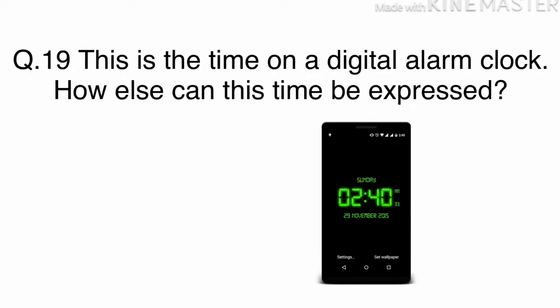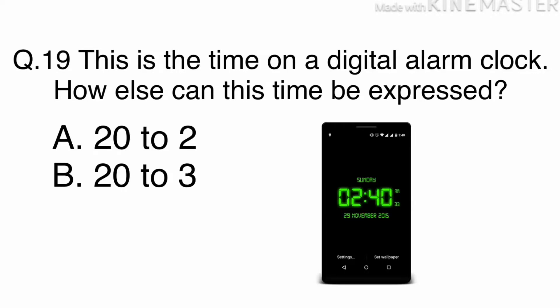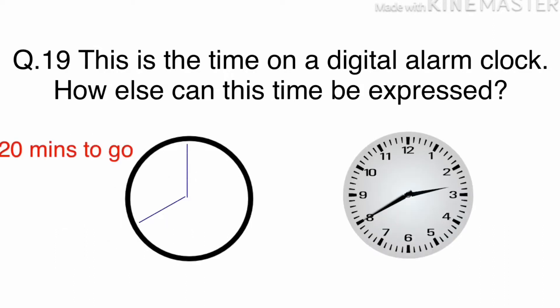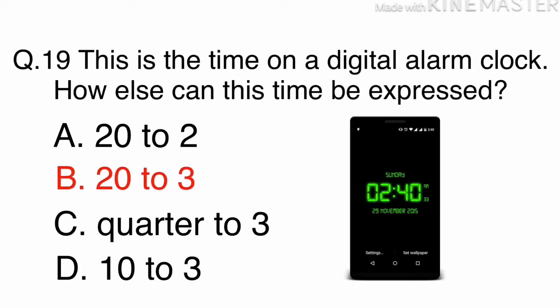Question 19. This is a time on a digital alarm clock. How else can this time be expressed? A: 20 to 2, B: 20 to 3, C: quarter to 3, or D: 10 to 3. 2:40 is 40 minutes after 2 o'clock, or 20 minutes to 3. The answer is B: 20 to 3.